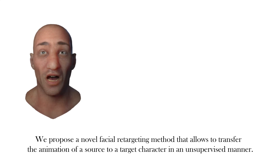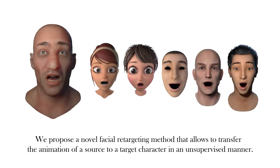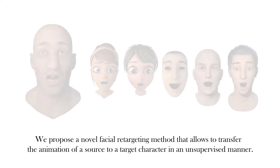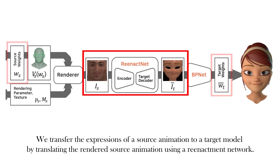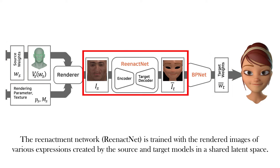We propose a novel facial retargeting method that allows transferring the animation of a source to a target character in an unsupervised manner. We transfer the expressions of a source animation to a target model by translating the rendered source animation using a reenactment network. The reenactment network is trained with the rendered images of various expressions created by the source and target models in a shared latent space.